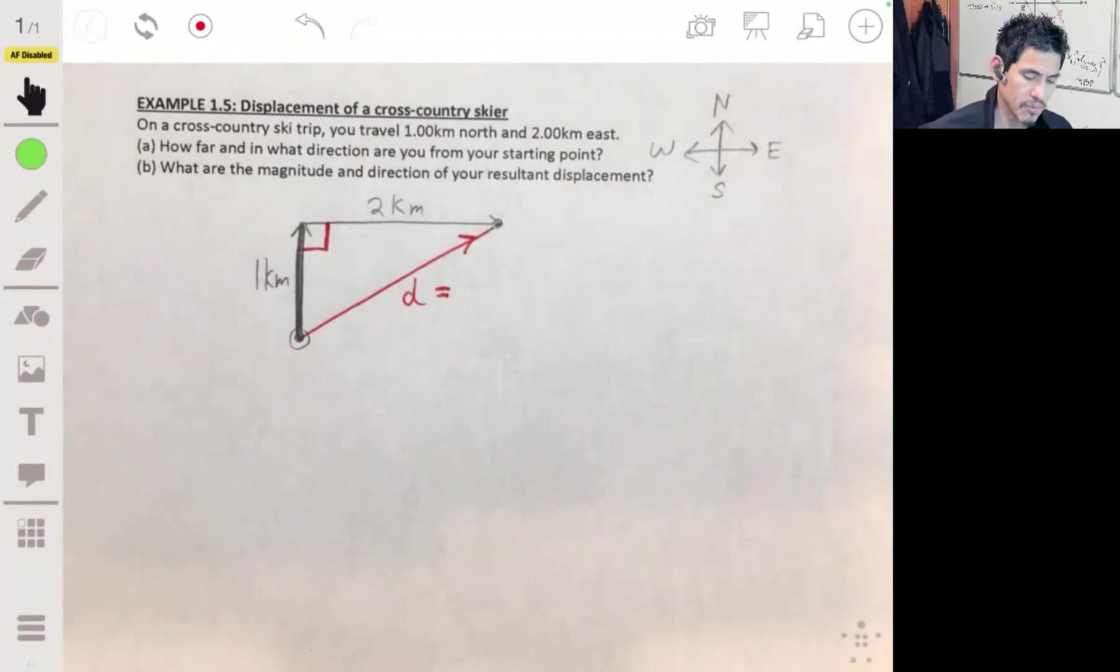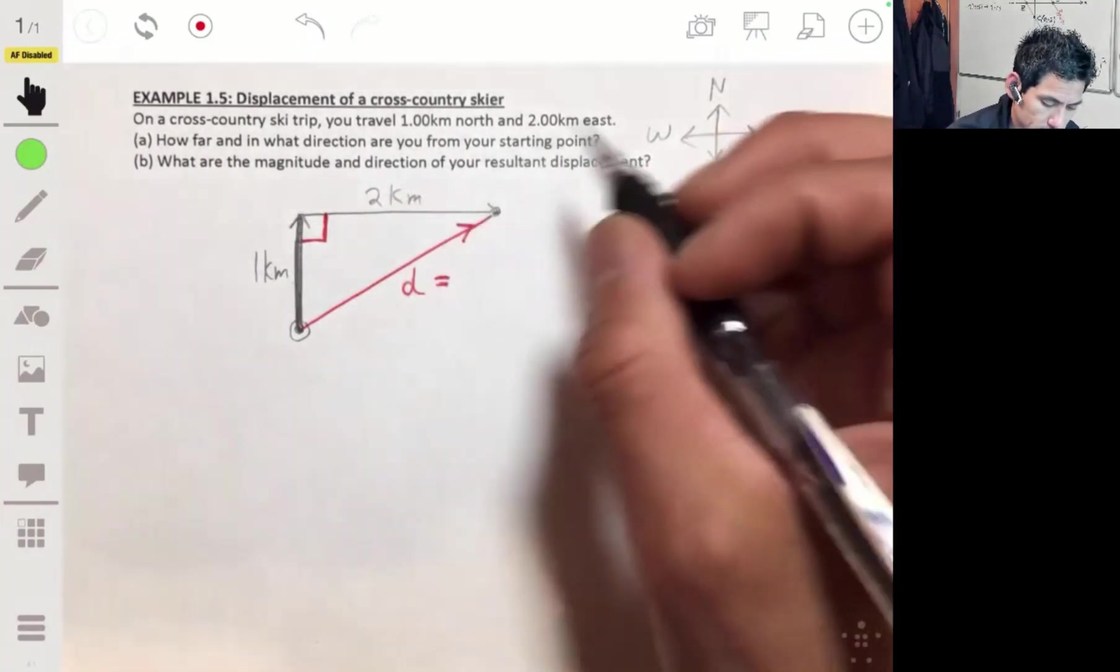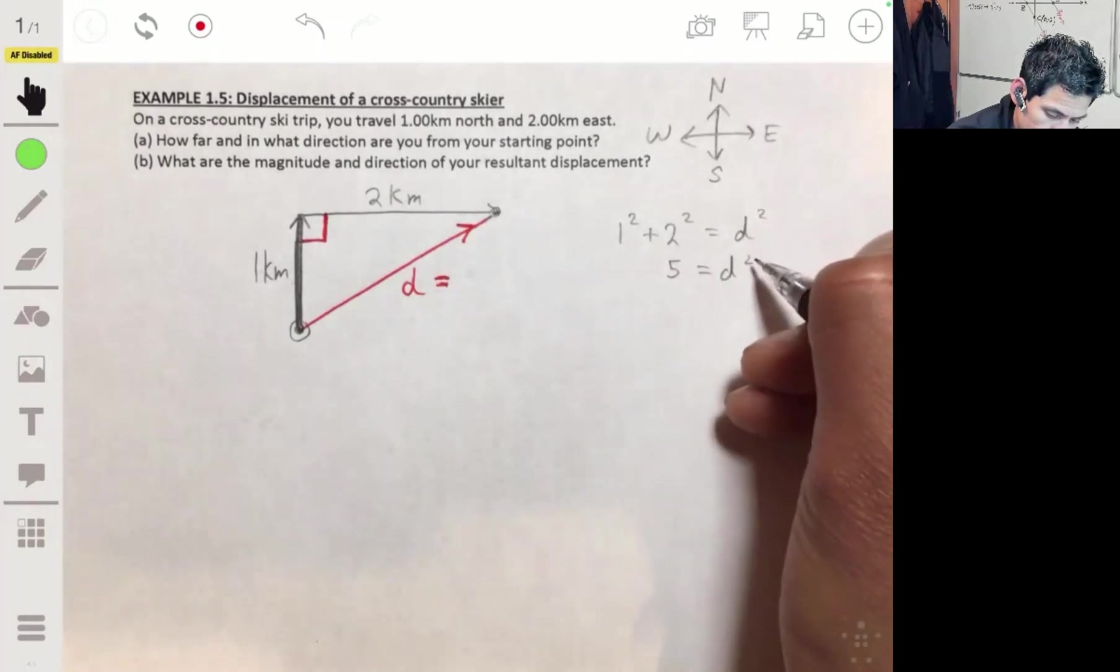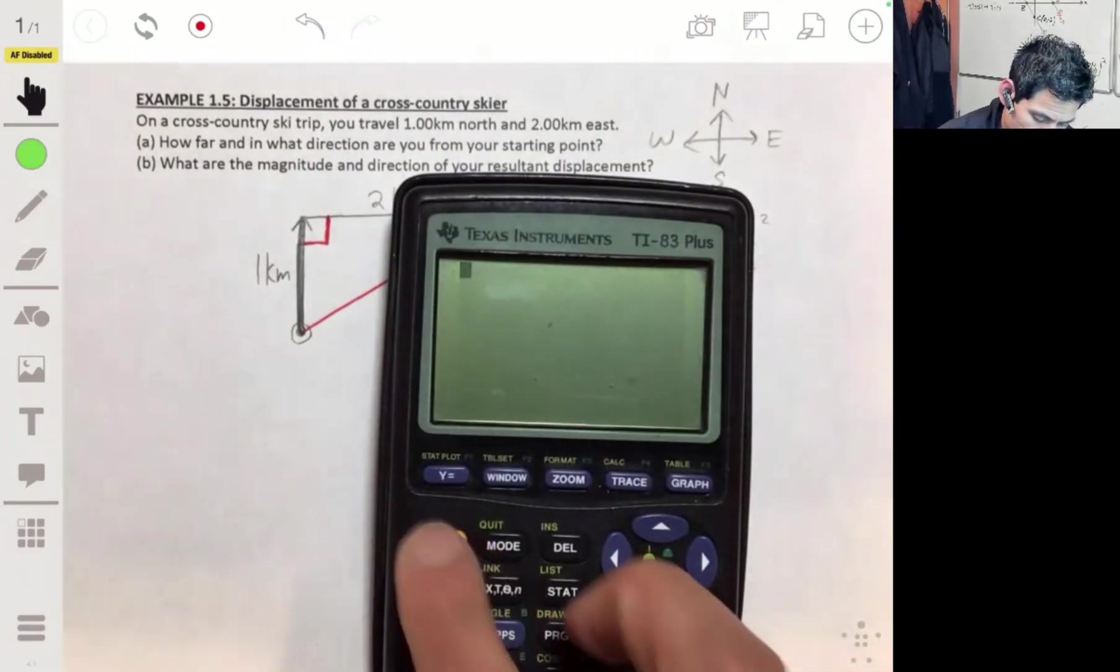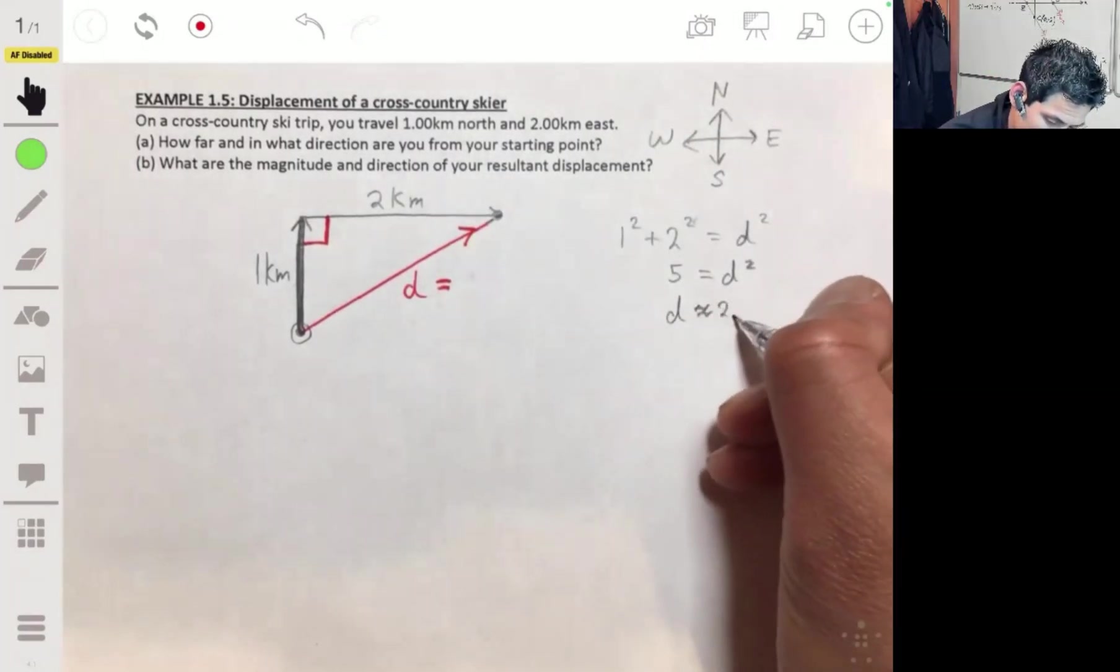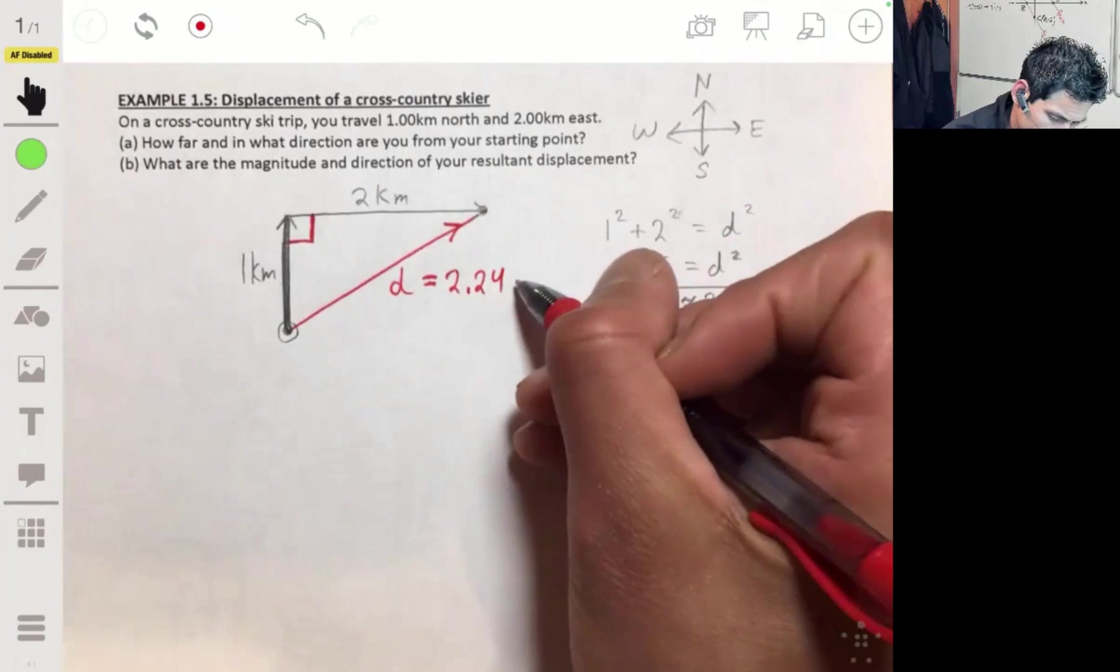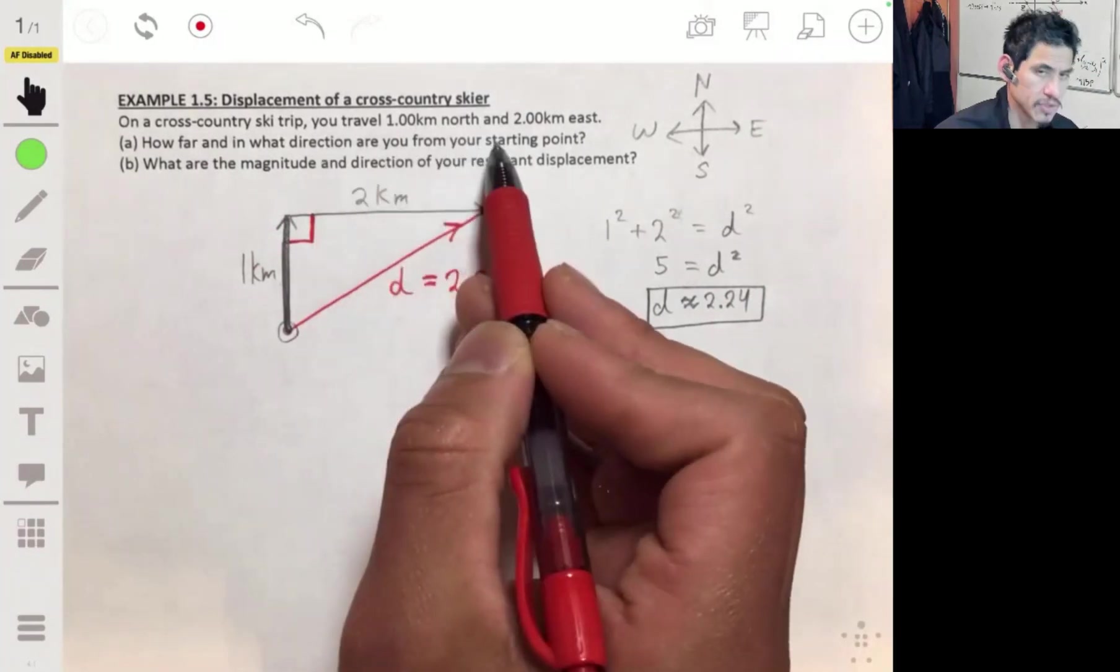So let's start off with that because we can easily calculate this using the Pythagorean theorem. So we have one squared plus two squared equals D squared. Then we have five is D squared. Taking the square root of five, we'll get about 2.24.